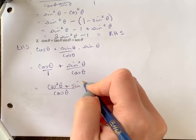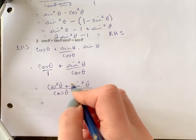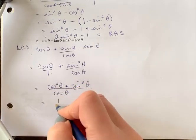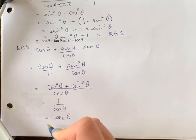When we're adding, again that should be familiar to us: cos²θ + sin²θ = 1. So we have 1 over cos θ, which is sec θ, which gives us our right-hand side.